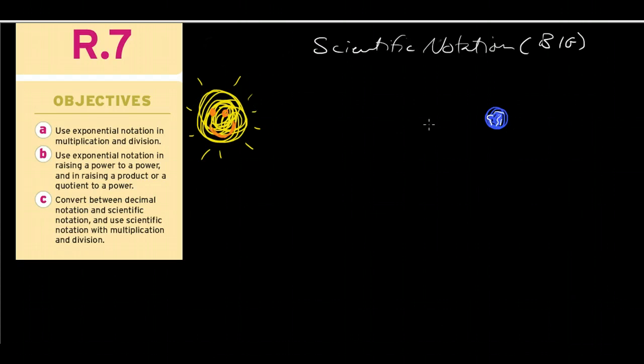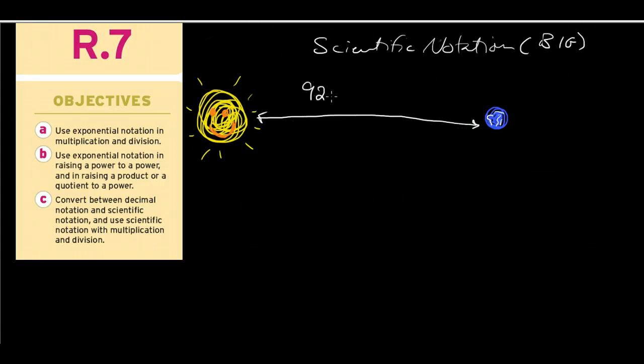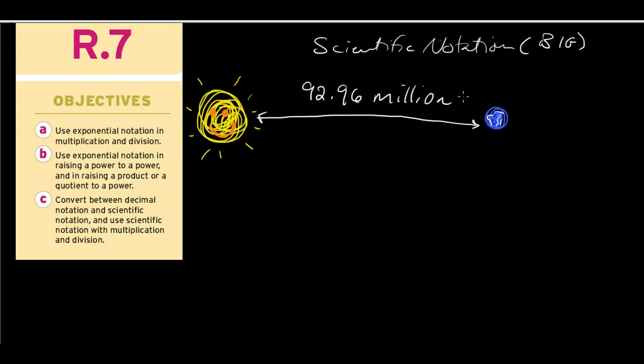Obviously, I'm looking at the sun and the earth, and the distance between these two objects in our solar system is about 92.96 million miles.